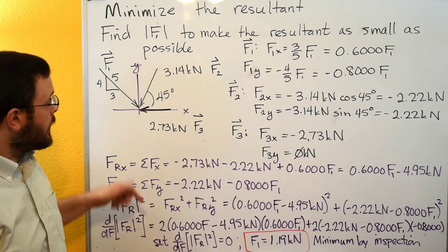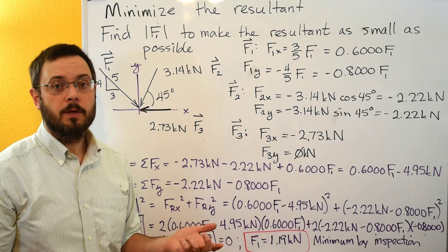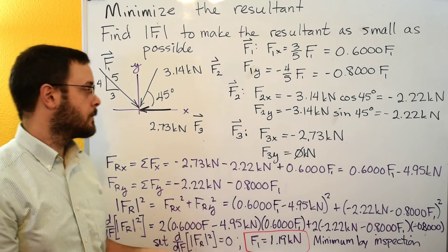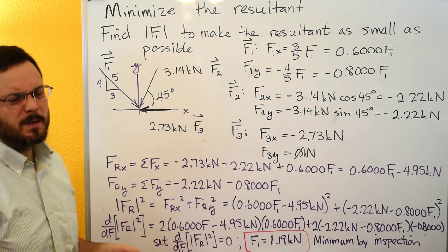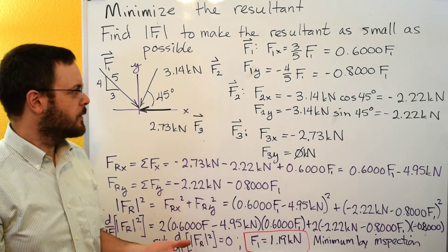And then now we're supposed to minimize it. So we've got a couple options. One would be maybe we can make it zero. Looking at this problem, there doesn't seem to be a way to make that resultant be zero. So that's not really an option.